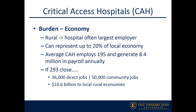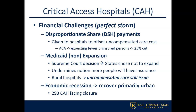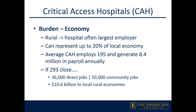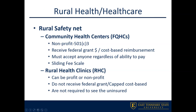Typically the two largest employers in rural communities are schools and hospitals. If a critical access hospital closes in a rural community, it creates significant job loss that can domino into other sectors of the local economy. With 293 facing foreclosure because of the recession, that translates on average to about 36,000 direct jobs and 50,000 community jobs, for a total of almost $11 billion hit to the local rural economy — a perfect storm of issues for critical access hospitals.